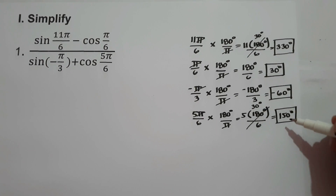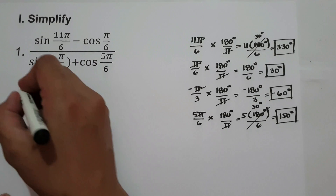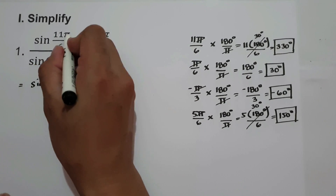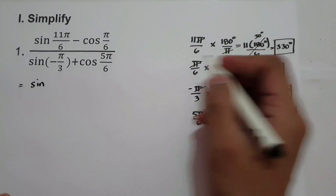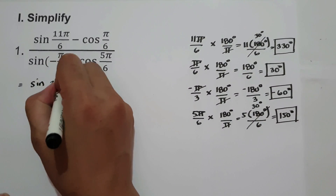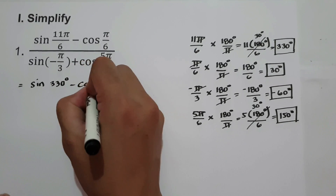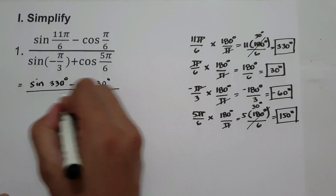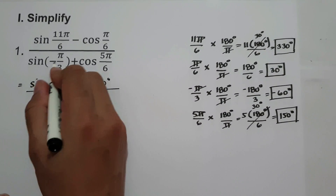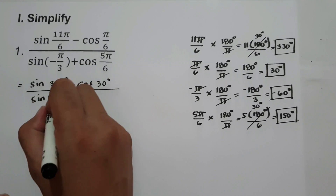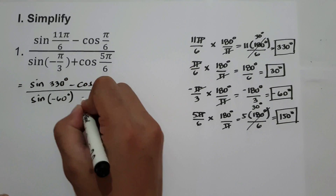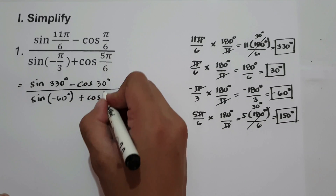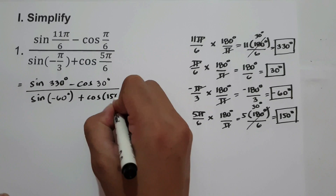Let us substitute these values into the given trigonometric expression. So we have sine 11π/6, which is 330 degrees, minus cosine π/6, which is 30 degrees — all over sine negative π/3, which is negative 60 degrees, plus cosine 5π/6, which is 150 degrees.